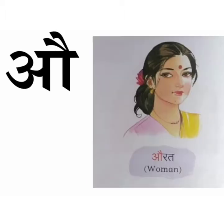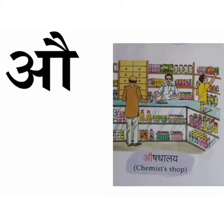AU se AURAT means women — Mummy, Aunty, Grandmother. They all are women. AU se AUSHADALAY means chemist shop. We get all the medicines at the chemist shop.